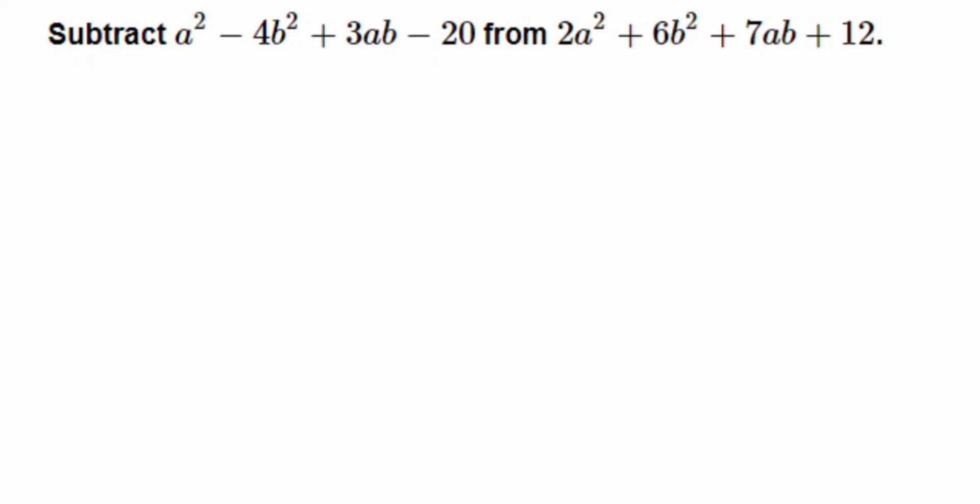Hey everyone, so here is a question on algebraic expression. The question is: subtract a² - 4b² + 3ab - 20 from 2a² + 6b² + 7ab + 12. Now they are saying from the second expression I have to remove the first expression.